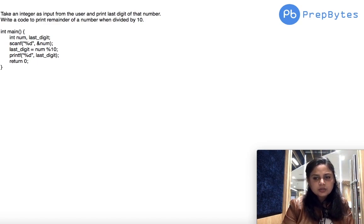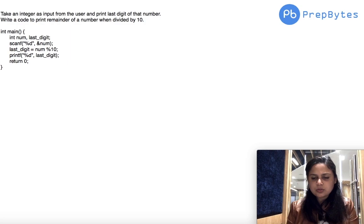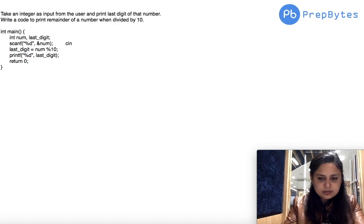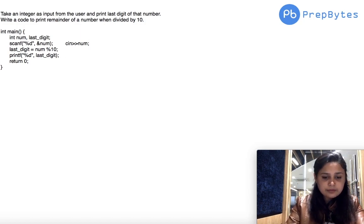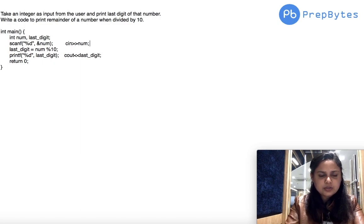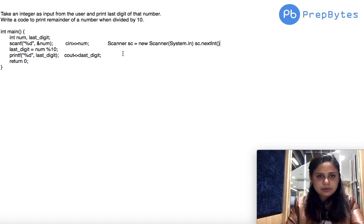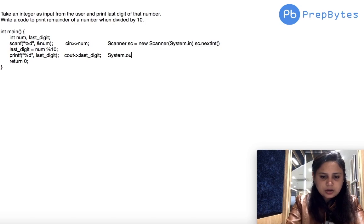As you go further, you'll get many questions around this — finding the sum of digits, reversing digits — and this concept of dividing by 10 to get the quotient and remainder will help you. For C++ syntax, replace printf with cout — simply write cout << last_digit. For Java, create a Scanner object, use sc.nextInt() to read the integer, and print with System.out.println(last_digit).